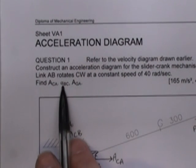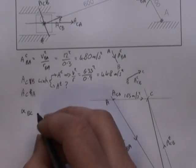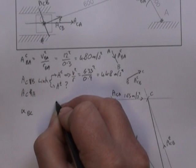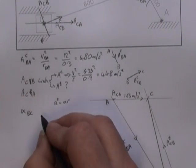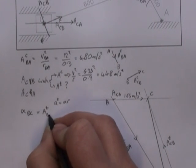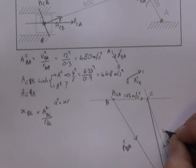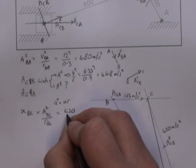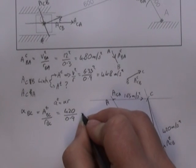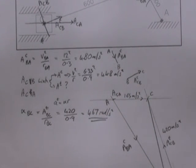The other one we want to know is the angular acceleration of BC. The equation we had from last year, A is equal to alpha R. These are the tangential accelerations that they're actually referring to. So this will be A_T of BC over radius BC. A_T of BC, that's this line here. If you scale that off, that will come to 420 meters per second squared. So this is equal to 420 over 0.9, which gives me 467 radians per second squared as my rotational acceleration.